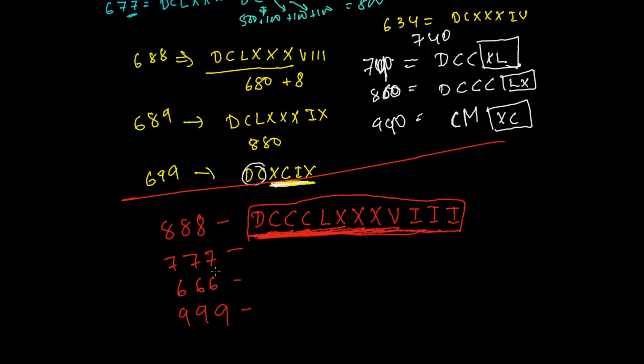Now let's write 777. It's not that much difficult. Let's write first 700: 500, 600, 700, then 50, 60, 70. And let's write 7, which is VII. DCCLXXVII. We got it. Mission completed.